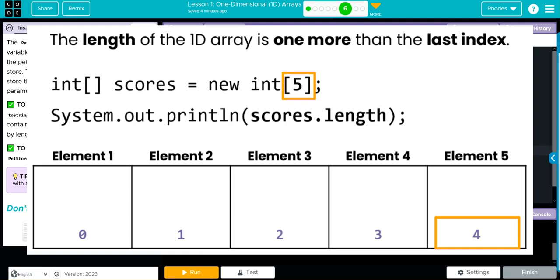Remember, we start counting at zero in computer science, so our first element is zero, one, two, three, four. Zero through nine—you might remember that from APCSP. That's our base 10 counting system. The length of a 1D array is one more than the last index. There are five elements, but since we start counting at zero, the last element is at index four.